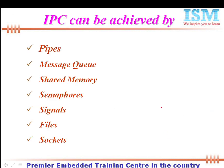In Linux we have different ways of implementing IPC. Linux provides IPC mechanisms like pipes, message queues, shared memories, semaphores, signals, files, and sockets. We have plenty of IPC mechanisms — we will not be able to cover all of them in a single day. In this session today, let us understand how to implement pipes and message queues.